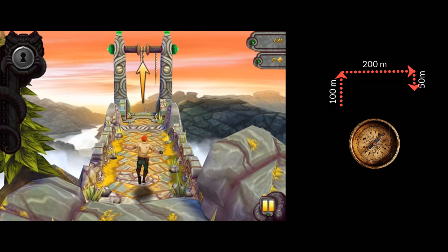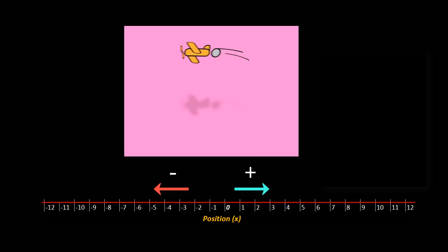If an object is moving in two or three dimensions, a plus or minus sign would not be enough to help us understand what direction it is moving in, and therefore we must use vectors.